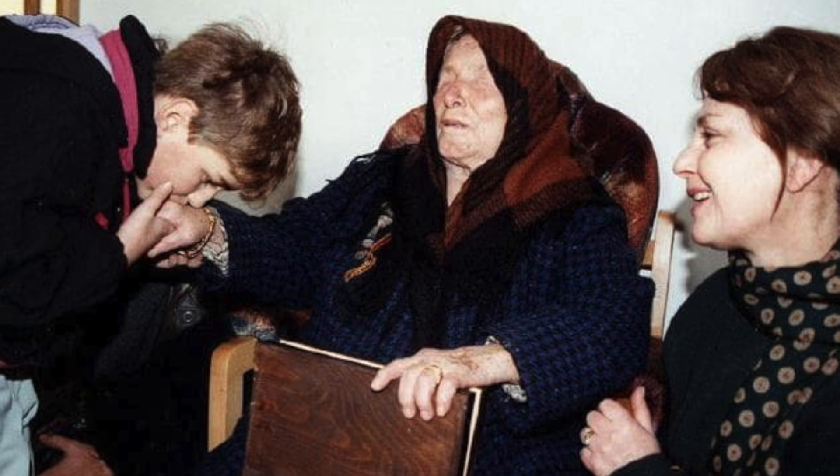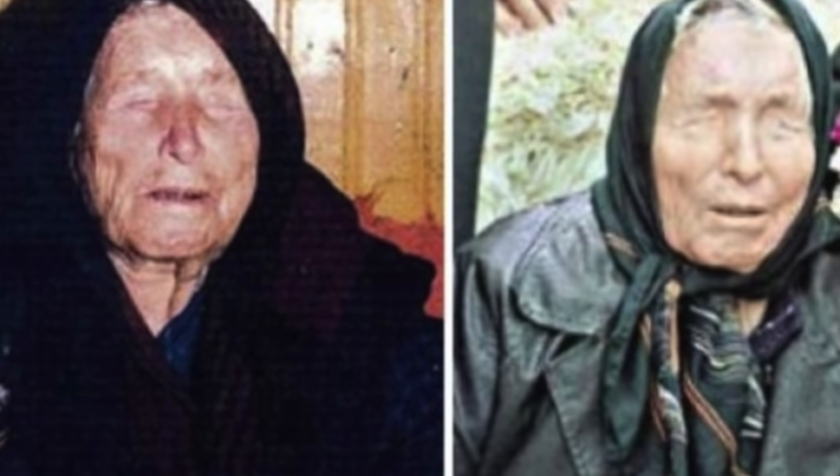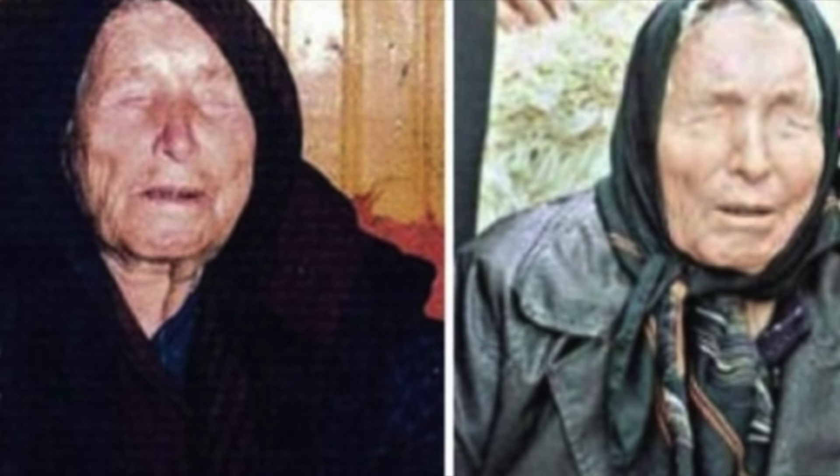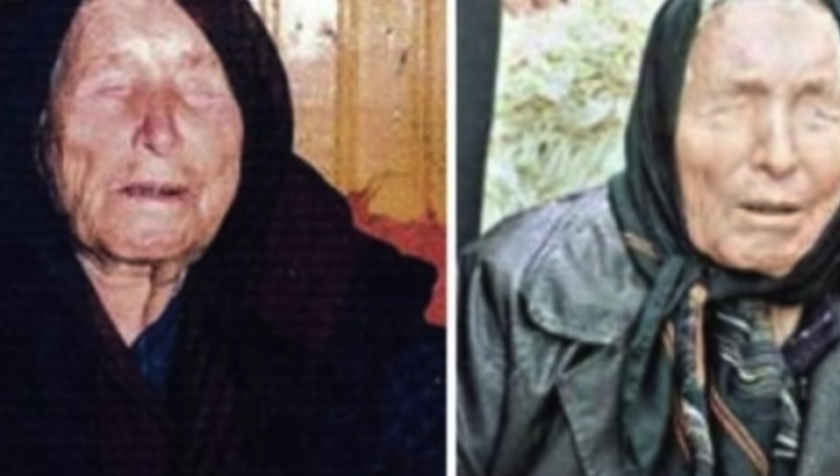Many people worldwide believe she possessed paranormal abilities. There are also various 22nd century predictions made by Baba Vanga. Some of them speak of humans turning into cyborgs, live robots, animals becoming half humans, and new religions, signals from space, and even an artificial sun that uses nuclear energy.